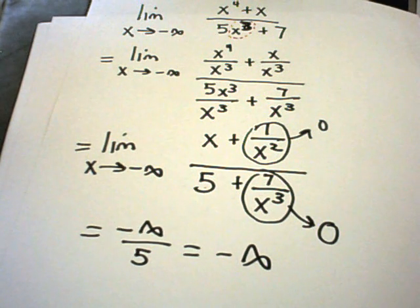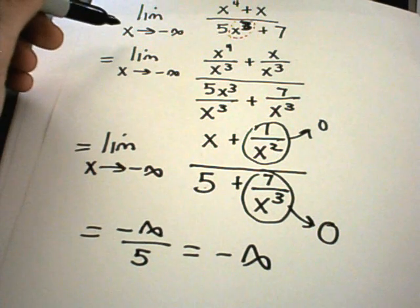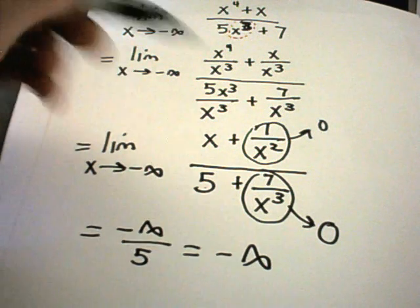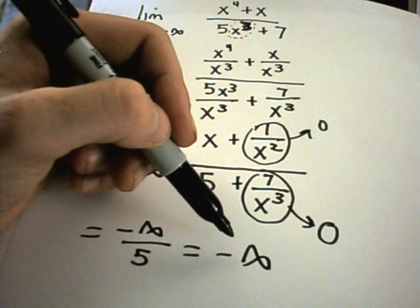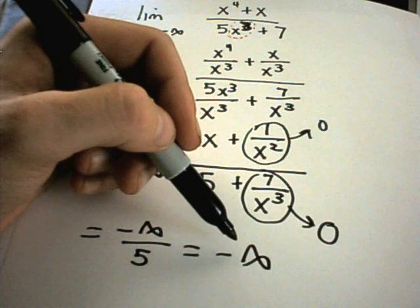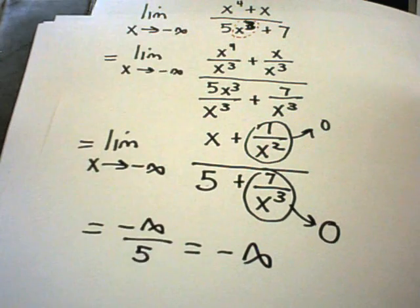In this case, you could say that this limit does not exist — sometimes people will say that. To me, it's a little clearer to say it's going off to negative infinity, because it gives you a little more insight into what's happening.